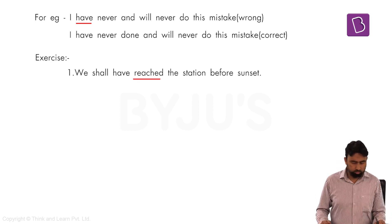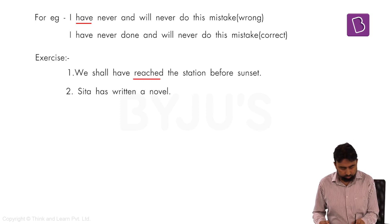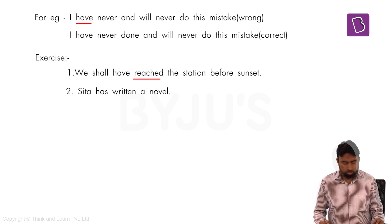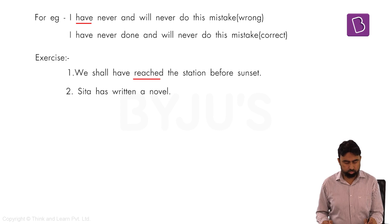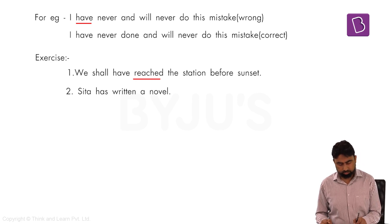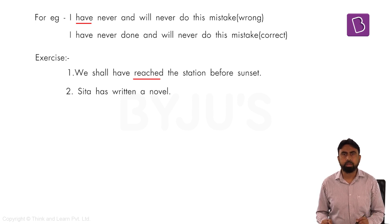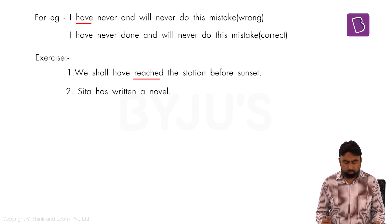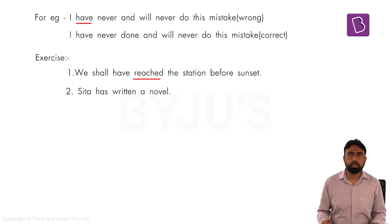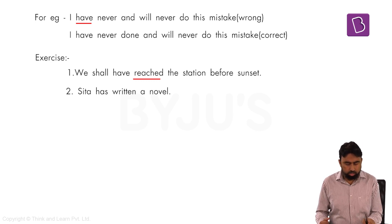Moving to the second example: 'Sita ___ a novel.' Options: A) has been, B) has been, C) is, D) shall be. Option C — 'Sita is written' — is incorrect. Option D — 'Sita shall be written' — can't be used because 'shall be' and 'will be' require the verb in -ing form or third form. So option A, 'has been,' is the correct answer.